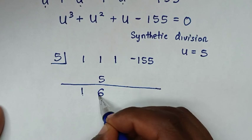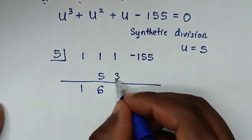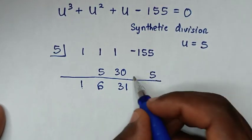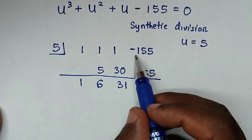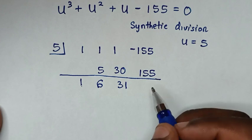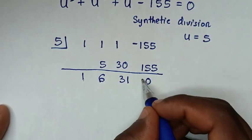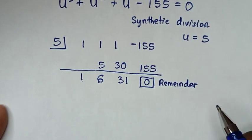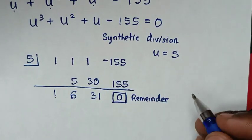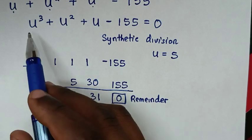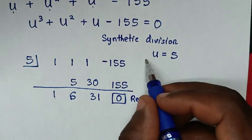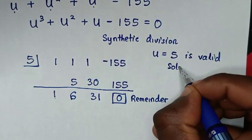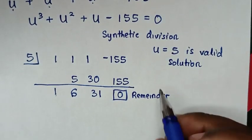1 plus 5 is 6. 5 times 6 is 30. 1 plus 30 is 31. 5 times 31 is 155. Negative 155 plus 155 is 0. Because the remainder is 0, u equal to 5 is a solution of this cubic equation, so u equal to 5 is a valid solution.